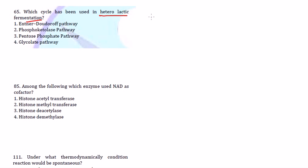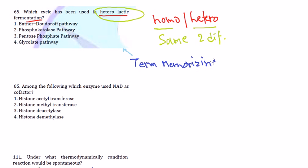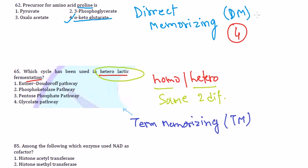The next question is: which cycle is used in heterolactic fermentation? This is not purely a direct memorizing question. You need to know the term — heterolactic fermentation. Lactic acid fermentation can be of two types: homolactic fermentation and heterolactic fermentation. Heterolactic fermentation gives rise to two different types of products, while homolactic fermentation gives the same type of product. So this is a Term Memorizing or TM type of question.